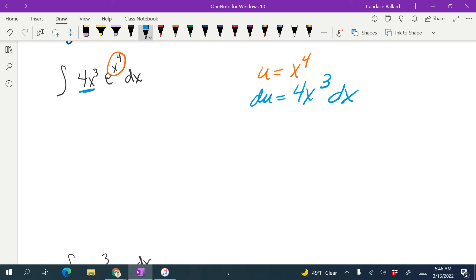So I am noticing I have 4x cubed dx, so this one should be a pretty straightforward substitution and nothing else to change. So I'm going to have e to the u, and then for the 4x cubed dx, I get to substitute in du.